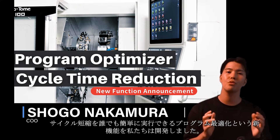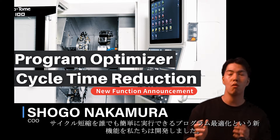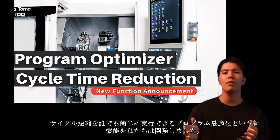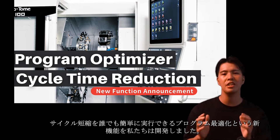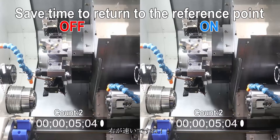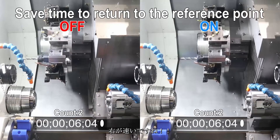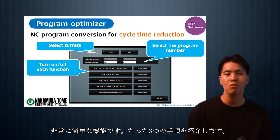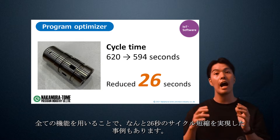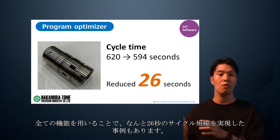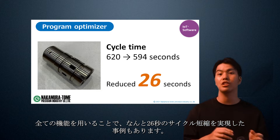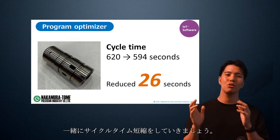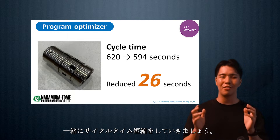We have developed a new feature called Program Optimizer that allows anyone to easily reduce the cycle time. There are only three steps to follow. A cycle time of 26 seconds was achieved by using all the functions. Let's work together to shorten the cycle time.